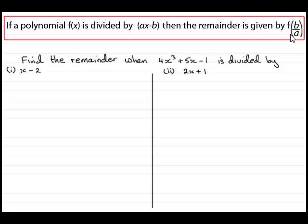To demonstrate this, what I've got is an example here. Find the remainder when 4x³ + 5x - 1 is our polynomial, and it's divided by, in the first case, x - 2, and in the second case, 2x + 1.